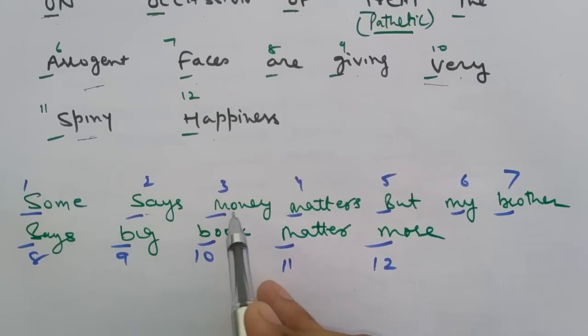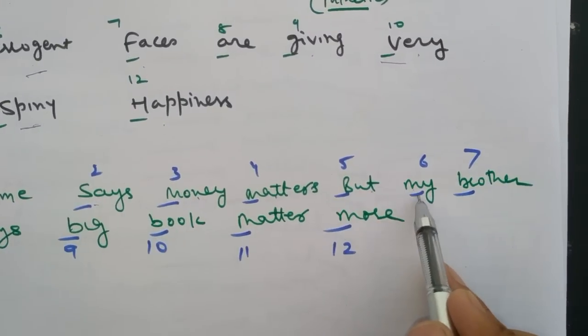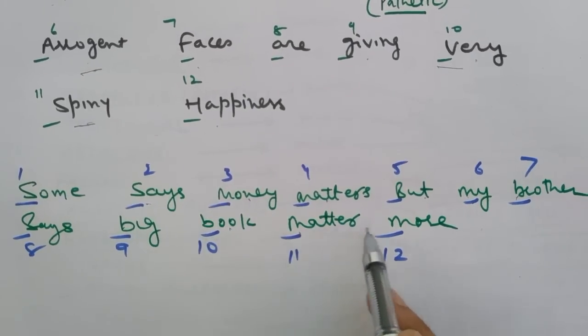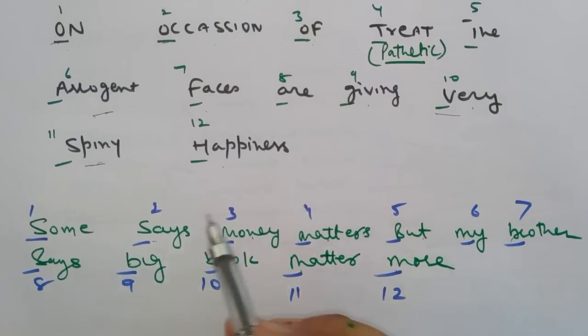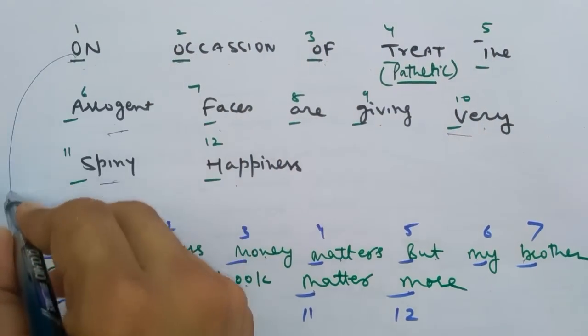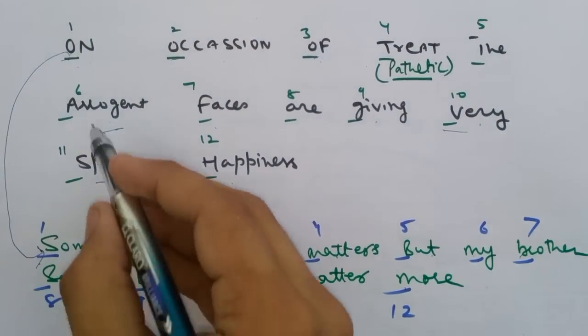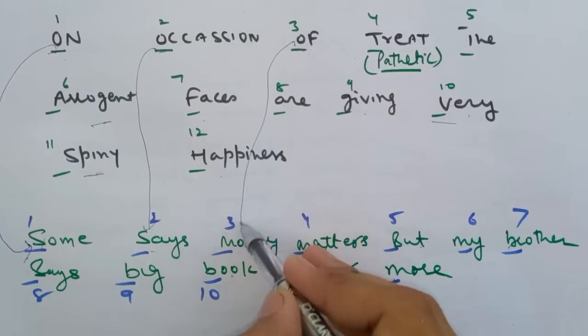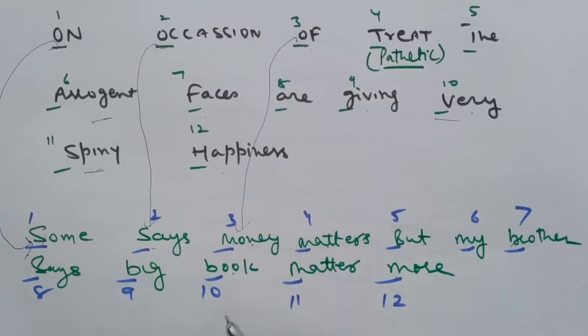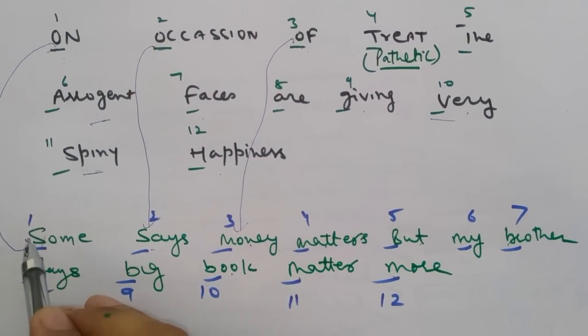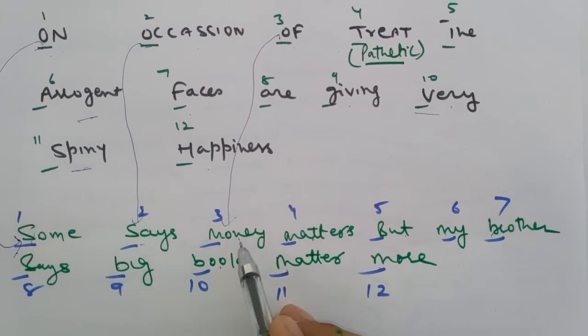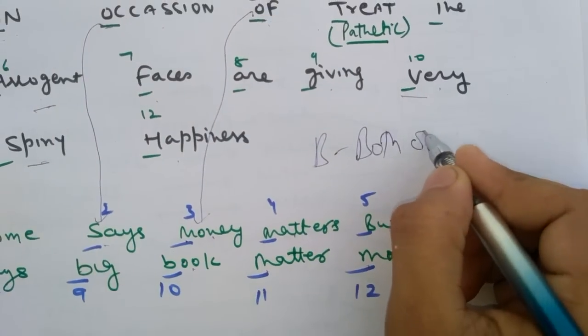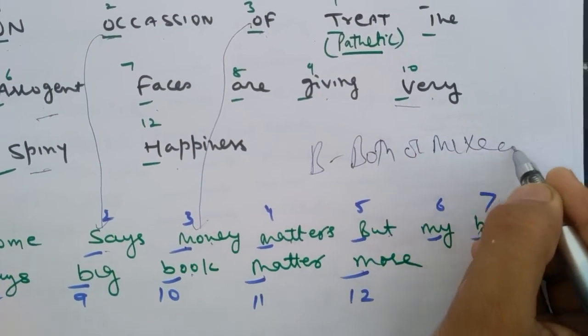The initial letters depict the cranial nerves in serial order. And the second sentence is: Some Says Money Matters But My Brother Says Big Books Matter More. It shows the nature of the cranial nerves. That is, the first olfactory is sensory, and side by side others in serial order. S means sensory, M is for motor, B is for both or mixed.